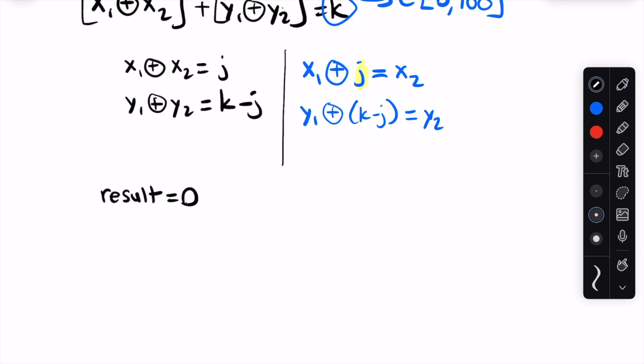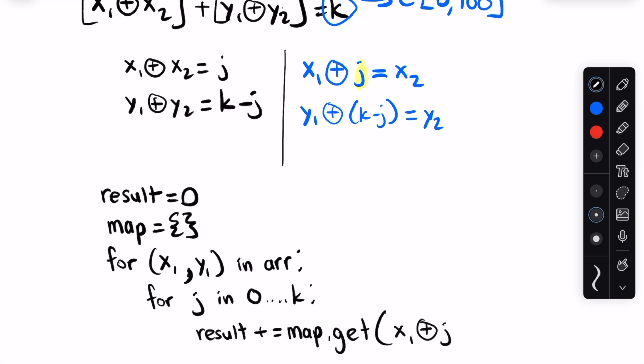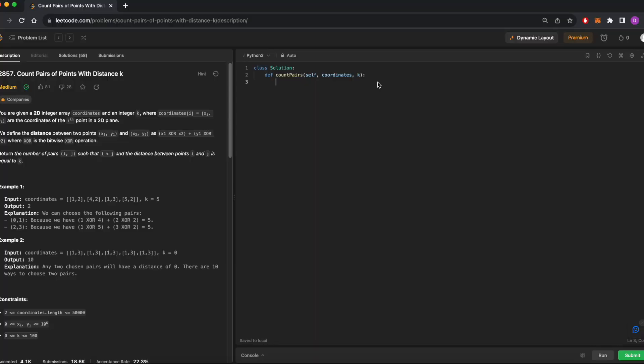In pseudocode, we'd have some running result. At each index in our iteration through the array, we'd iterate from 0 to k, and check if the tuple x1 xor j, y1 xor k minus j is present in our map. If so, then we'll add that value to our result. Let's jump into the code now.